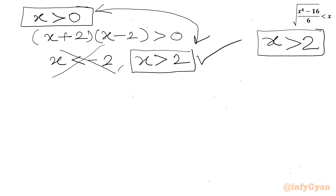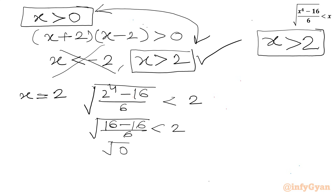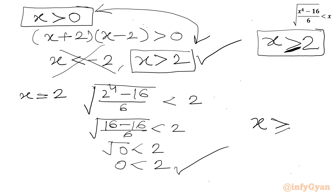Now let us check whether equality holds at x = 2. Substituting: square root of (2⁴ minus 16) over 6 gives square root of (16 minus 16) over 6, which is square root of 0, which equals 0. Since 0 < 2 is true, equality holds. So the updated condition is x ≥ 2.